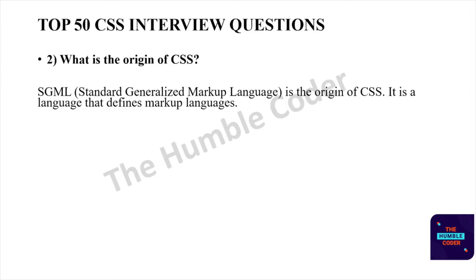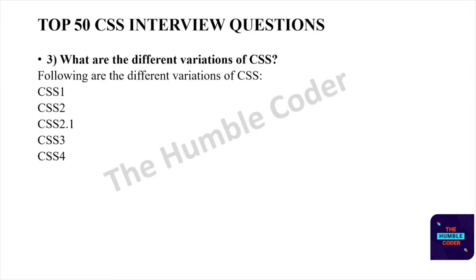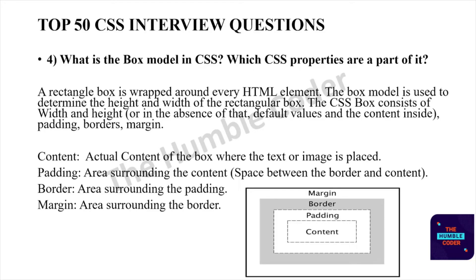Moving on to the next question: what are the different variations of CSS? The different variations of CSS are CSS 1, CSS 2, CSS 2.1, CSS 3, and CSS 4.